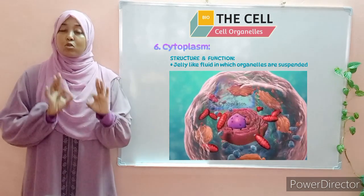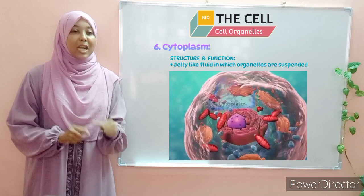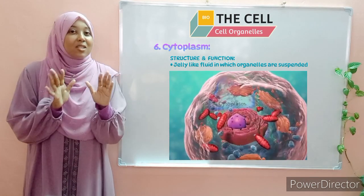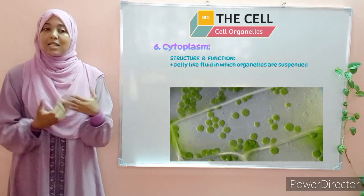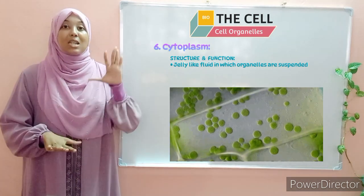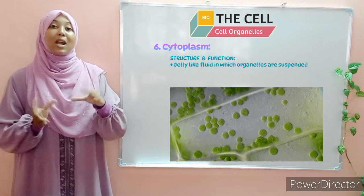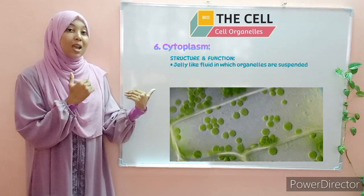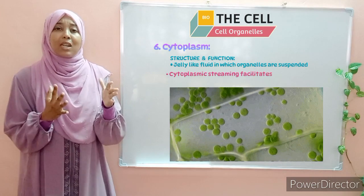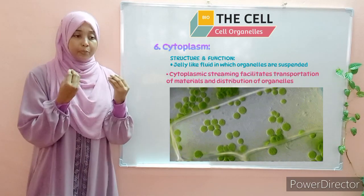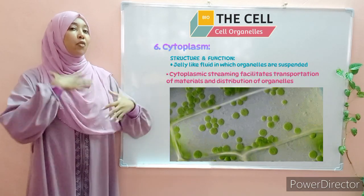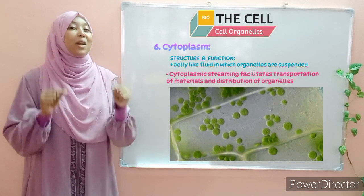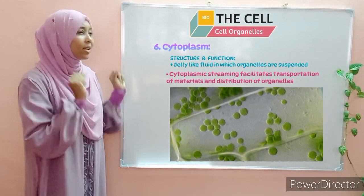In the cytoplasm is also where chemical reactions take place. One interesting fact about the cytoplasm is that it is not static — it continuously moves. This movement is known as cytoplasmic streaming, and it is very important because it helps in the transportation of materials across the cell and also in the distribution of organelles. So organelles can move from one part of the cell to another through cytoplasmic streaming.